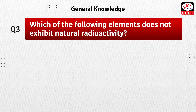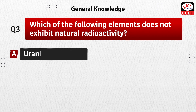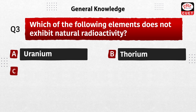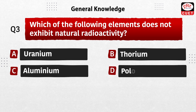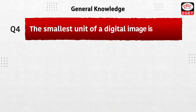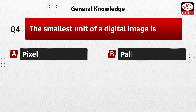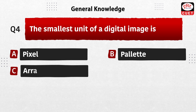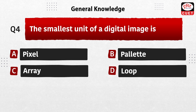Next question: which of the following elements does not exhibit natural radioactivity — uranium, thorium, aluminum, or polonium? The correct answer is option C, aluminum. While uranium, thorium, and polonium are radioactive elements, aluminum is not naturally radioactive.